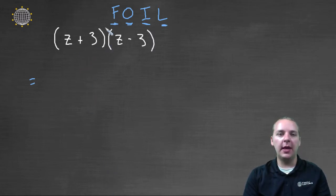So first up we have the F, so z times z, those are your first terms, z times z is z squared. Then we'll go to the outside two terms, z times negative three would make minus three z.